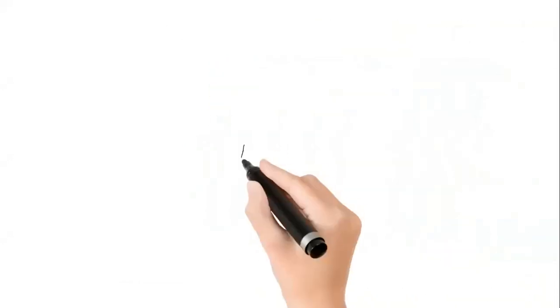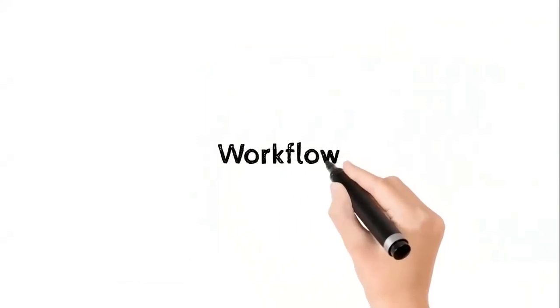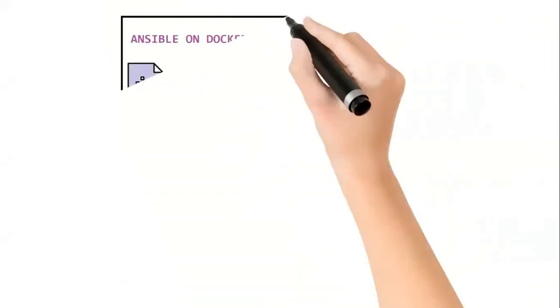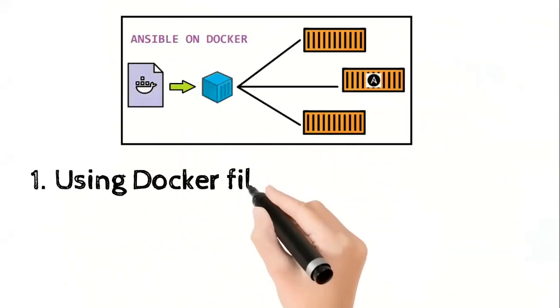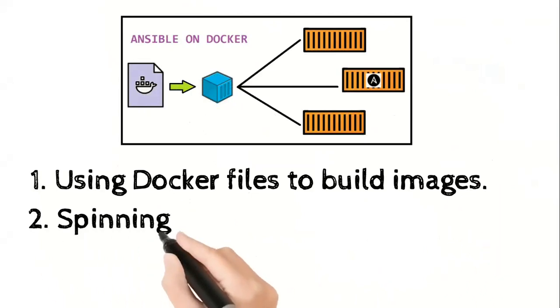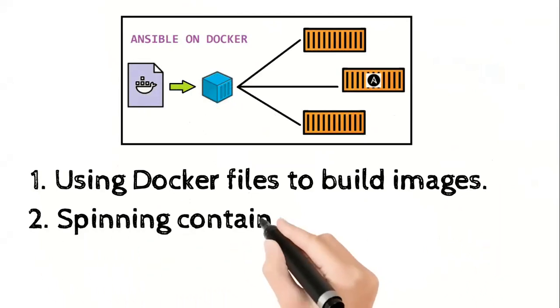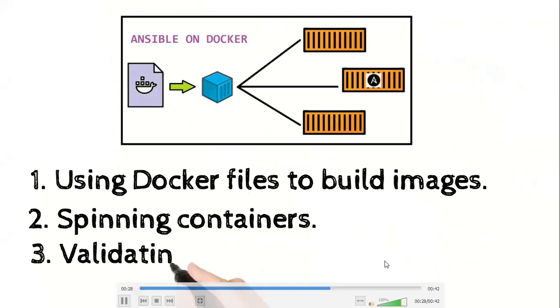Let's understand the basic workflow we are going to follow. We will be building Docker images out of a custom Dockerfile, after that spinning some containers out of it, and then finally validating if Ansible is working fine or not. So without wasting much time, let's move directly to the demo section.